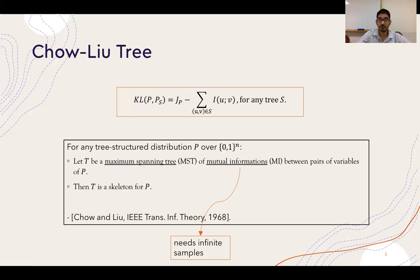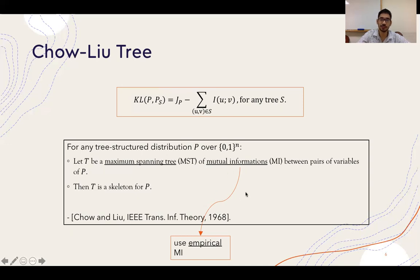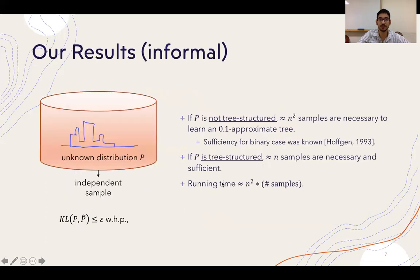That is the algorithm we follow in this work. One thing we immediately notice is that we don't have the true mutual information between pairs, as that would require an infinite number of samples. Therefore, we use what is most natural: we take a certain number of samples and use the mutual information of the empirical distribution obtained from those samples.